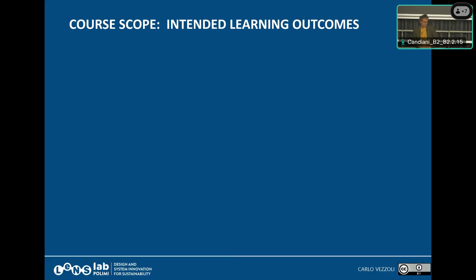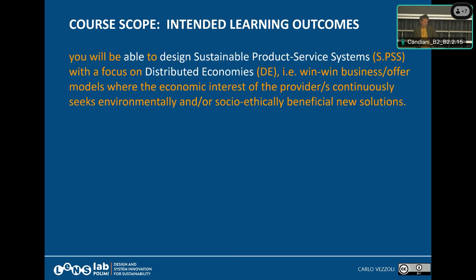The scope of the course — the intended learning outcomes — is what I'm promising to you. At the end of the course, you will be able to design a product service system. More specifically, you will be able to design a sustainable product service system: environmentally and socio-ethically sustainable.